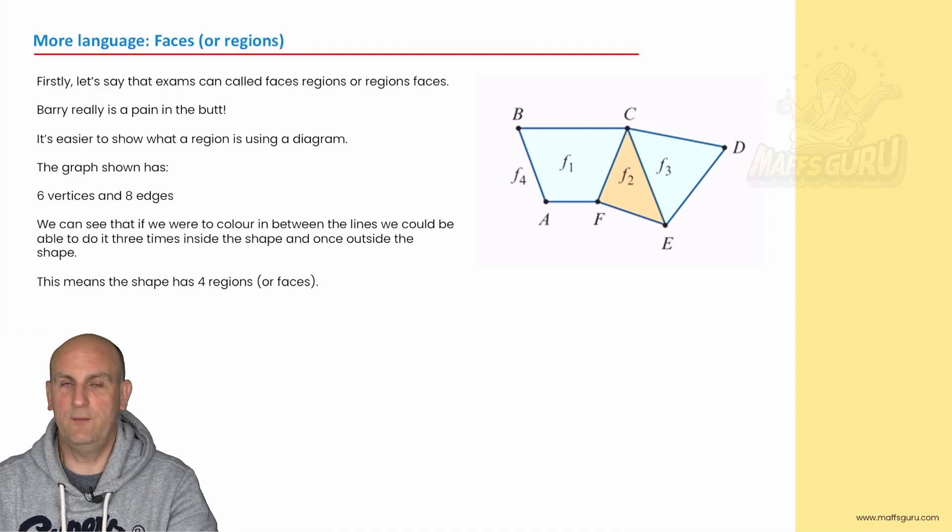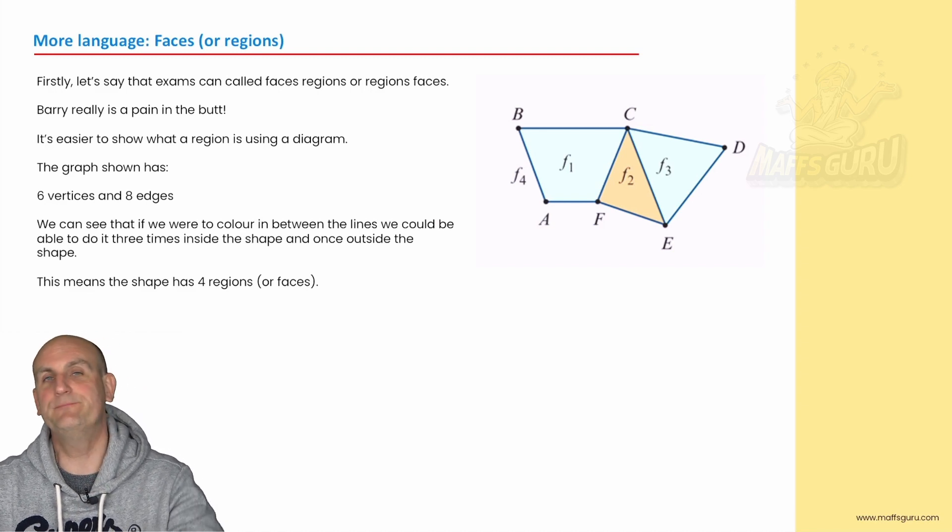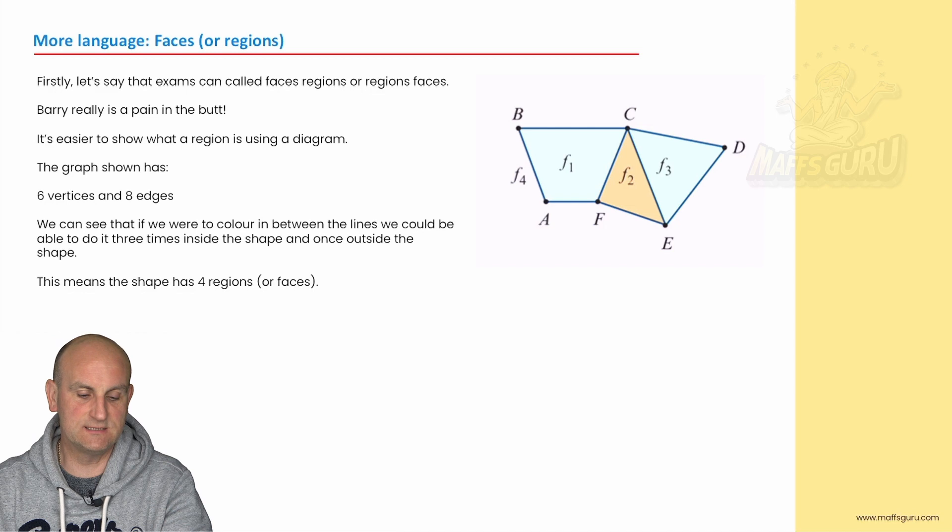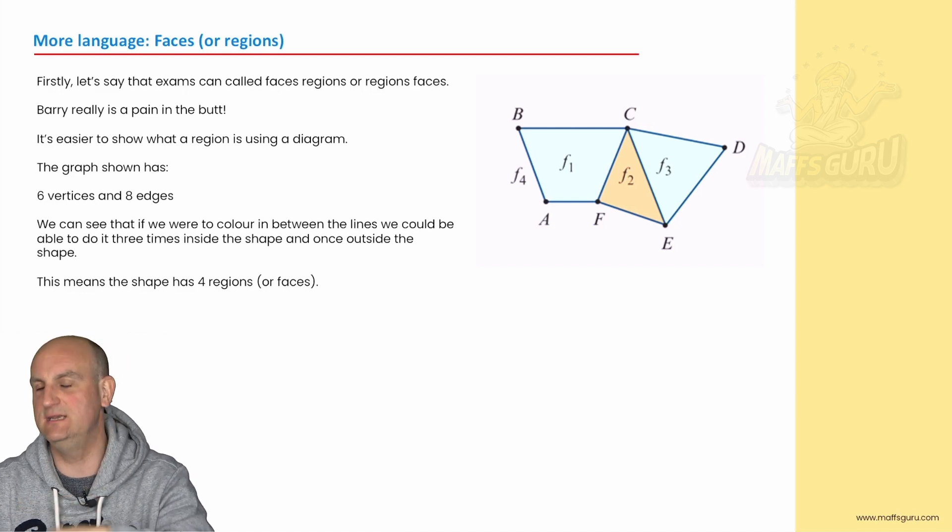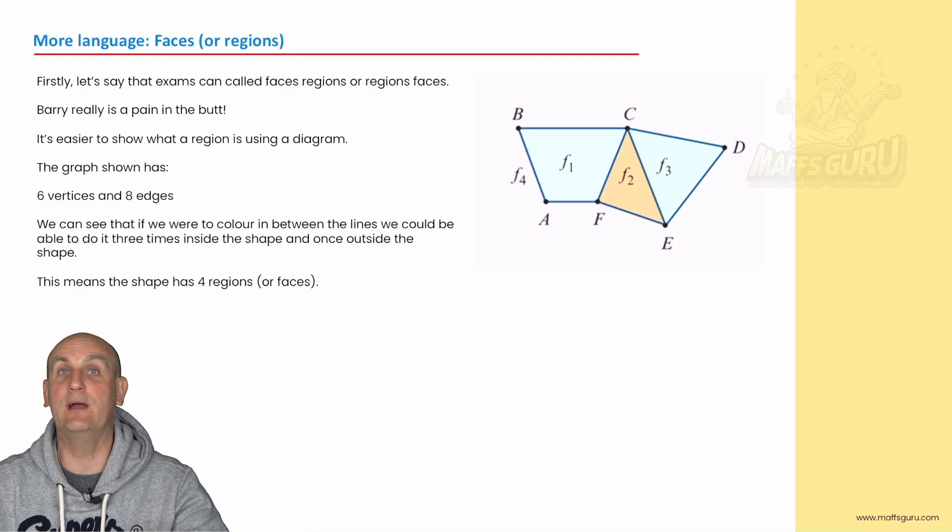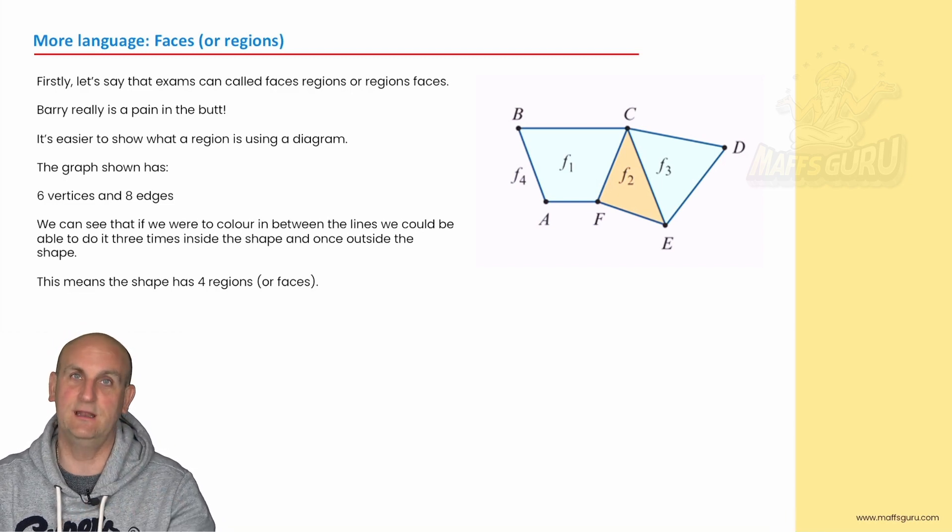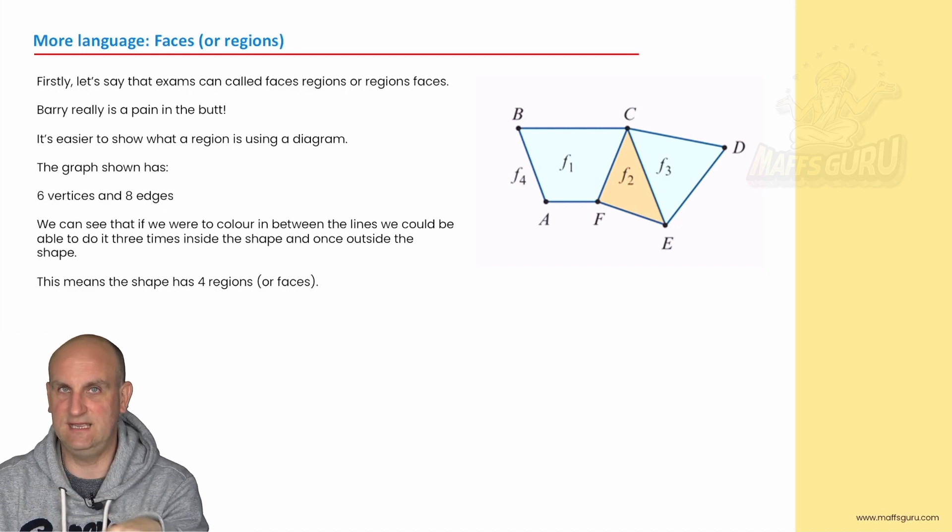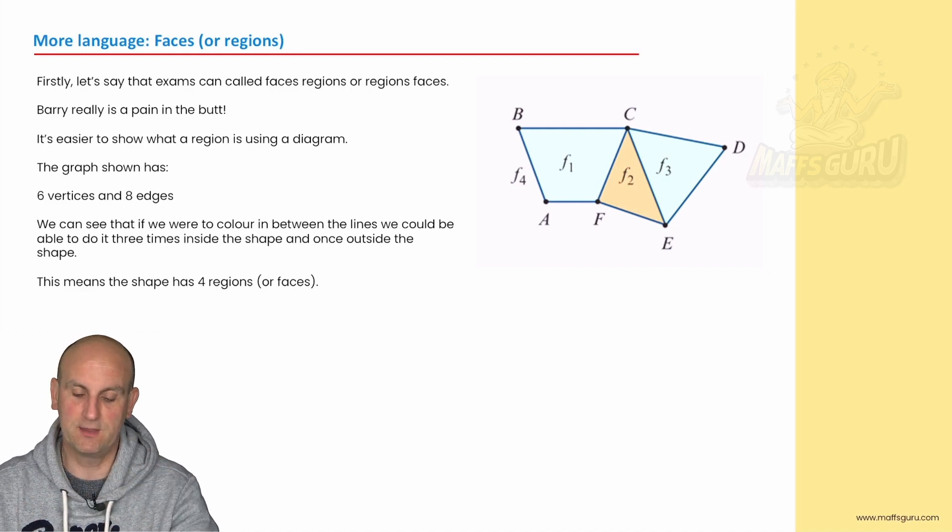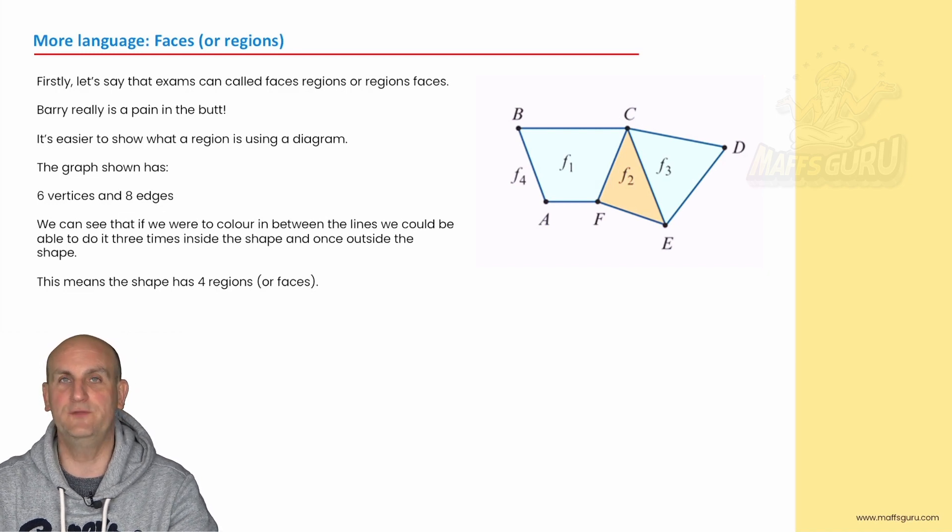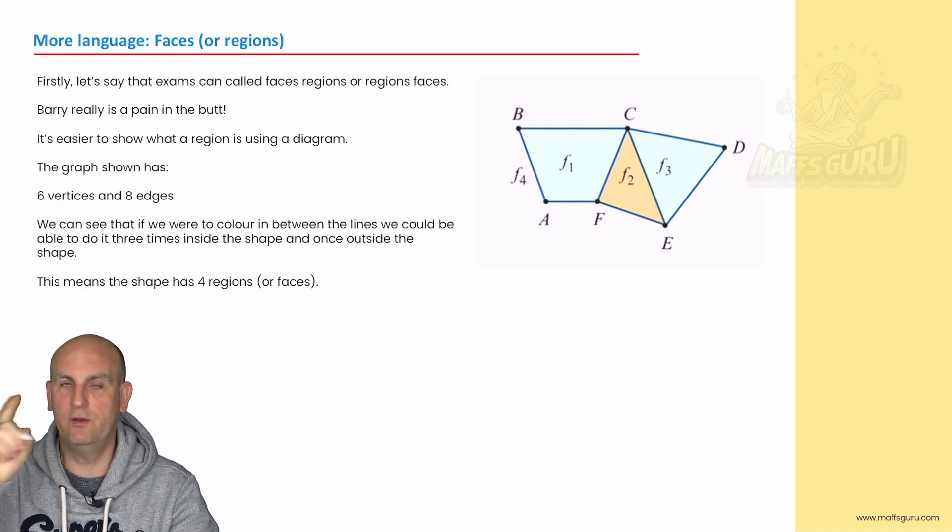Now why do we want to know about planar graphs? Well it's really important because it's not always about vertices and edges. There's something else as well now called faces. Yes I know I have a face. I'm so sorry. It is not particularly attractive. I do my best normally in the dark. But we need to know about what a face is for Euler's formula. So what is a face? A face is basically a section of a planar graph that you can colour in between the lines with one on the outside as well.